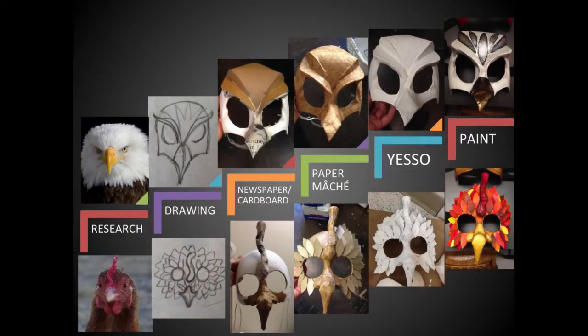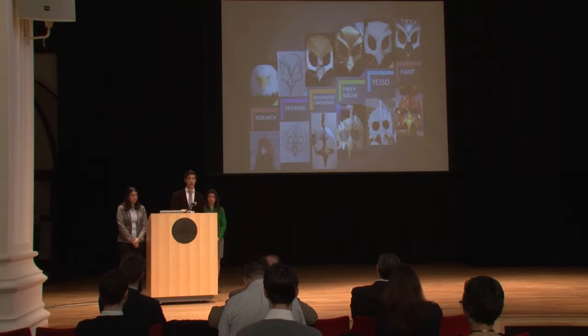So I started with research. I looked at every character in that scene and thought about which animal would better represent who they were and what they wanted in that specific scene. Then I started doing drawings about how I wanted each mask to look, thinking about geometrical shapes I found in each animal's faces. After that, we bought basic masks and covered them with newspaper and cardboard to get the shapes I wanted, then covered them with sculpture coat and yeso to make them stronger, and finally painted them to match the colors of the robes the characters were wearing.